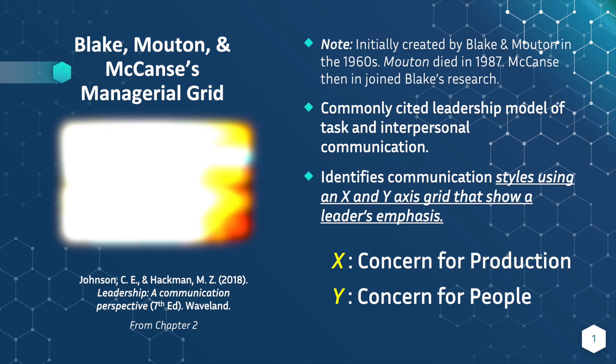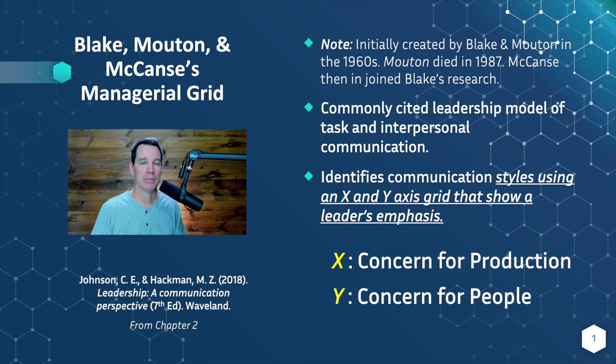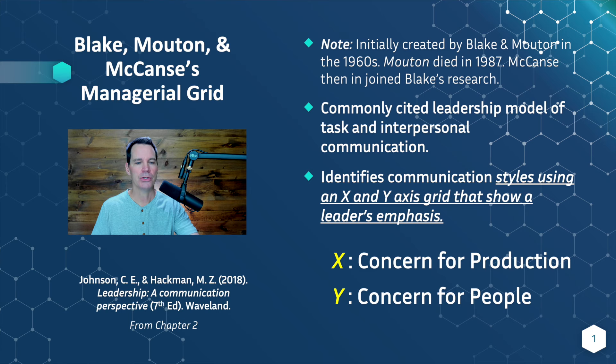Blake and McCance's managerial grid is a really commonly cited leadership model for both task and interpersonal communication. It's connected to several others that focus on tasks and relationships, but this one has some added value that we'll see in a minute. It identifies the communication style using an X and Y axis, and that shows the leader's emphasis. The X axis is a concern for production, and the Y axis is a concern for people. You're going to see these kinds of variables and dimensions in many other leadership theories from that era — the 40s, 50s, and 60s.